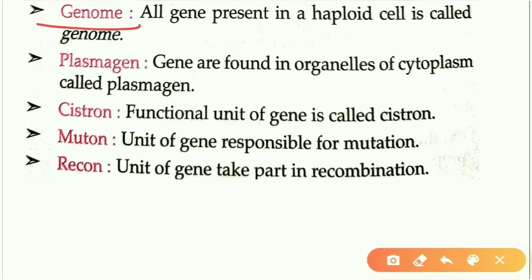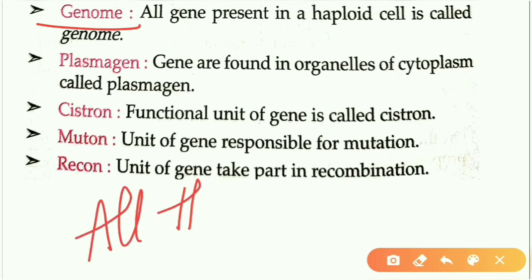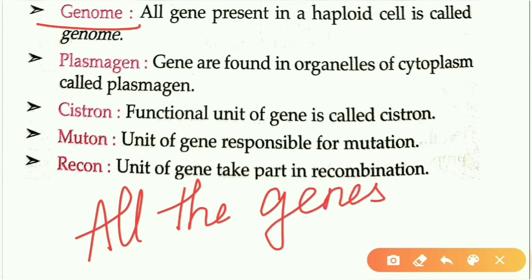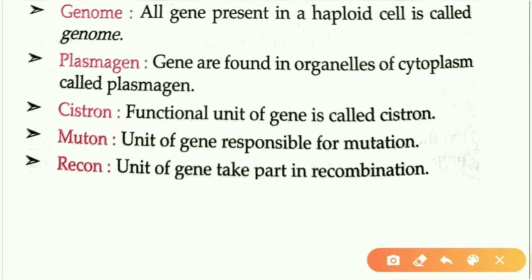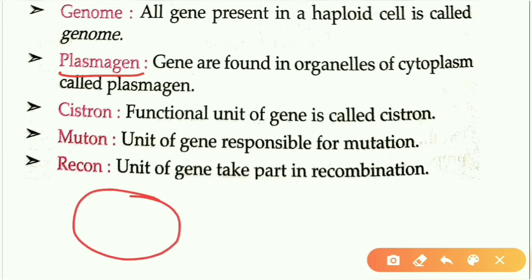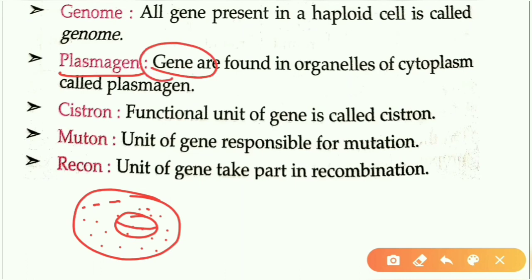Genome: in simple terms, genome means all the genes present in an individual — the entire genetic material is called the genome of an individual. Plasmogens: genes found in the organelles of the cytoplasm are called plasmogens. The cytoplasm contains organelles like mitochondria, chloroplasts, and ribosomes, and the genes present in these organelles are called plasmogens.